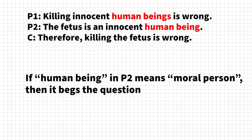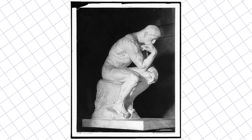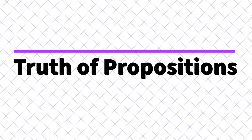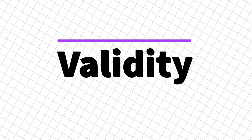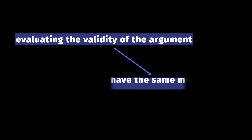To summarize the equivocation fallacy: arguments are usually evaluated in two main ways — we look at the truth of the propositions, and we evaluate whether the conclusion actually follows from the premises. When you commit the equivocation fallacy, you interpret the ambiguous words as having different meanings to make the propositions true or plausible. But when evaluating whether the conclusion follows, you interpret those same ambiguous words as having the same single meaning. Only by treating the ambiguous terms as univocal does the conclusion appear to follow — making the argument seem valid when it is not.